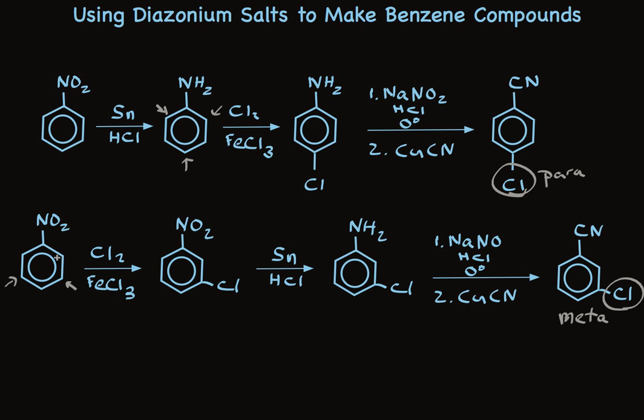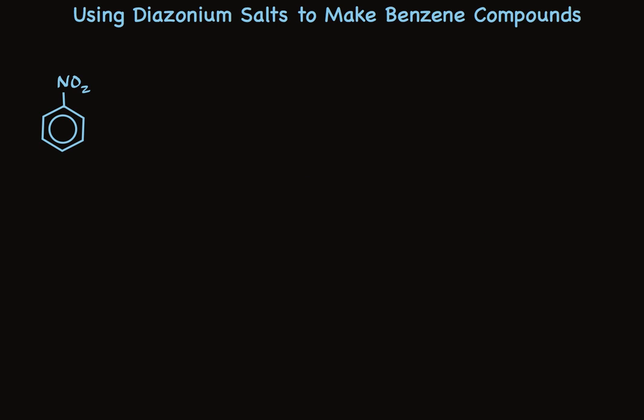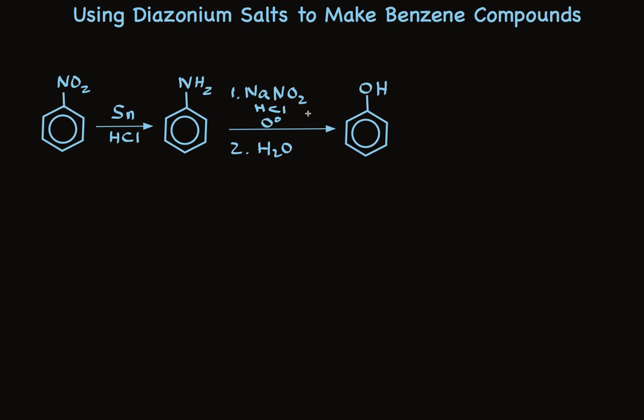The use of diazonium salts is a very powerful technique for controlling the regiochemistry of disubstituted benzenes. Here's another example. Starting with nitrobenzene, it's reduced to aniline, and in this synthesis we'll immediately replace the NH2 group. We first make the diazonium salt, and then simply treat it with water to put the OH on the ring. The OH is an ortho-para director itself, so when we carry out a chlorination reaction, we'll get para-chlorophenol. We'd make some ortho byproduct, which we'd have to separate out.